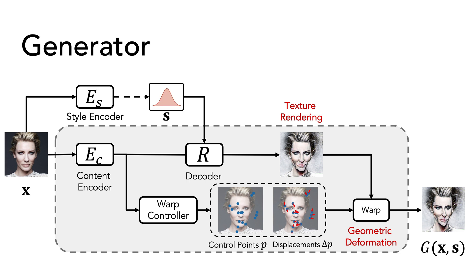The texture style is conditioned on a latent vector S by using adaptive instance normalization in the decoder. During training, a style encoder is also trained to reconstruct the images.